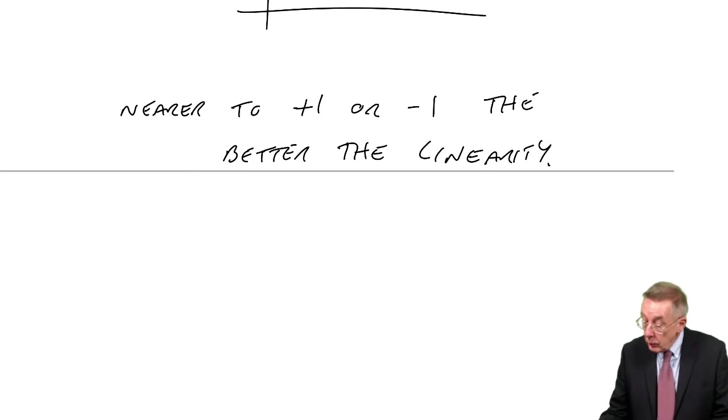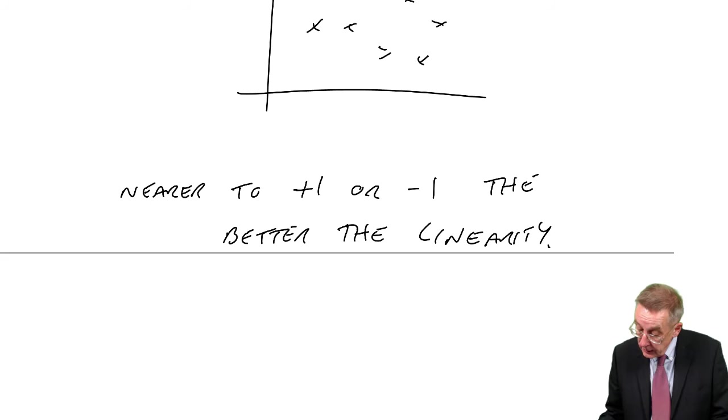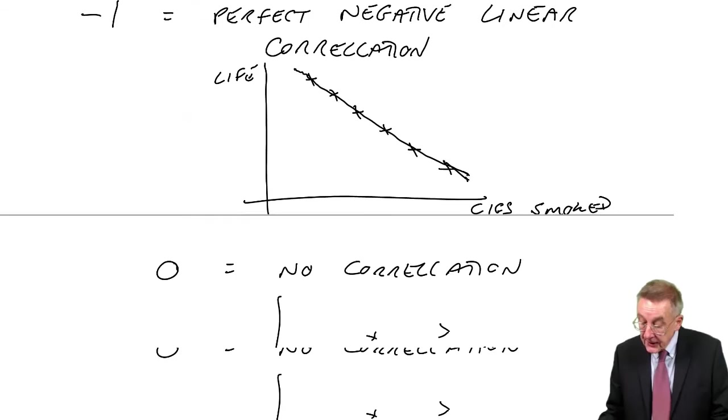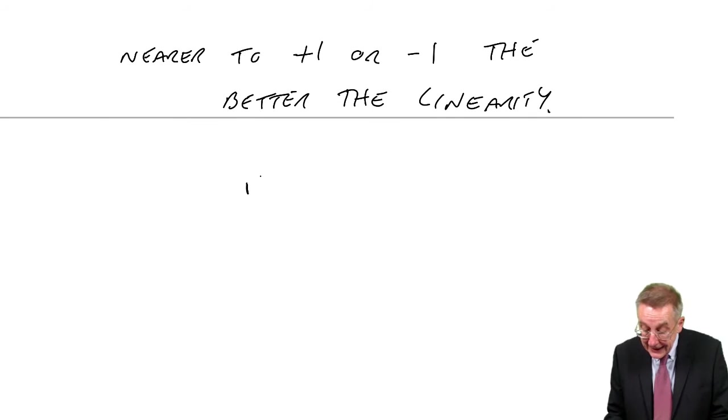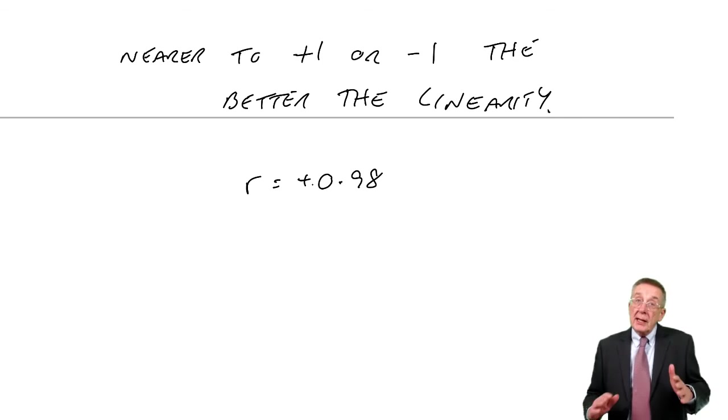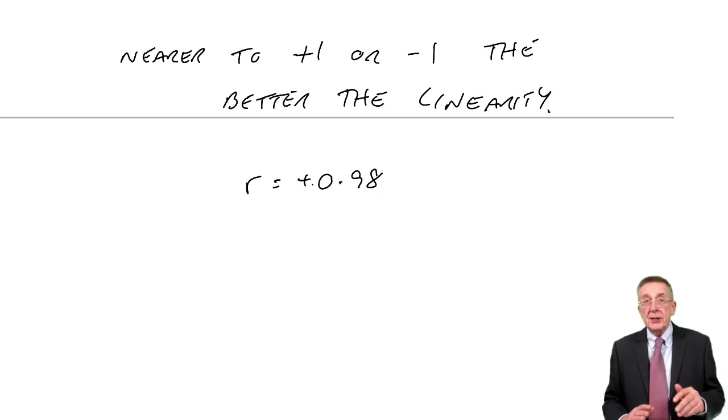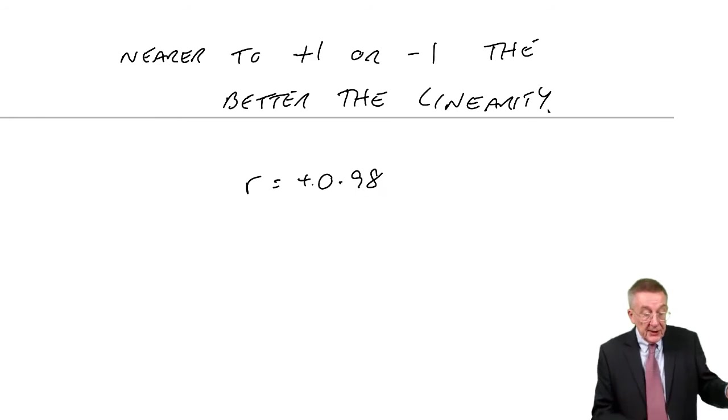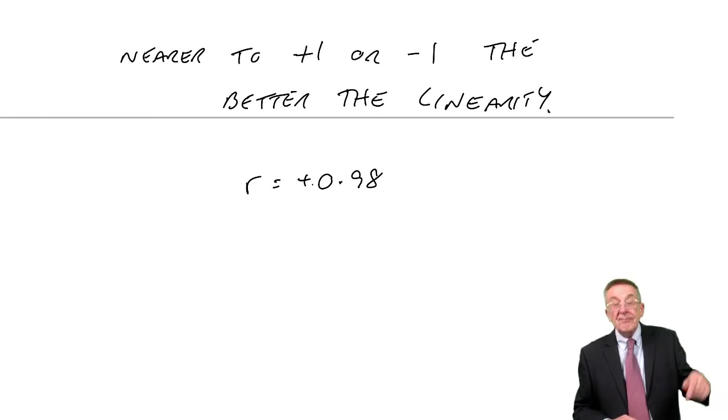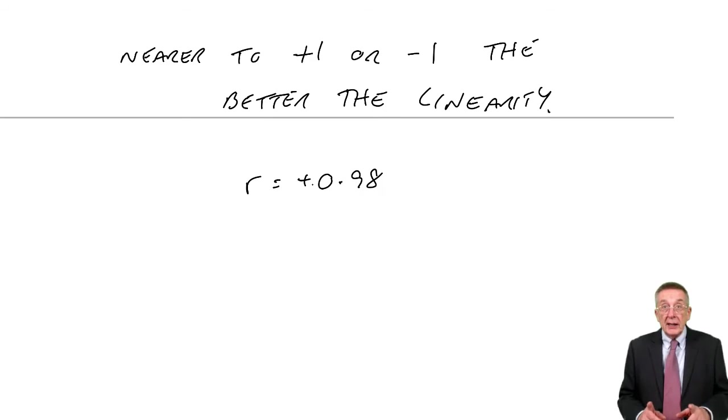Now, to have perfect correlation is unlikely, for it to be plus or minus one. But the nearer it is to plus one or minus one, the better the linearity. And so what did we get? We got a coefficient of correlation of plus point nine eight. And what does it mean? It means, first of all, it is positive correlation. So they are both going up together, which we can see at a glance, more units, more cost.